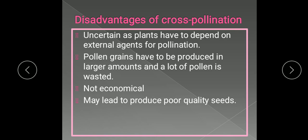Sometimes cross-pollination may lead to poor quality seeds. Although viable and healthier seeds are usually produced, there may be mixing of some feeble genotype — feeble meaning weak. If one or both parent plants have weak genes and these genes come together after fertilization, the seeds produced will be of poor quality. So there are chances that cross-pollination may lead to poor quality seeds.